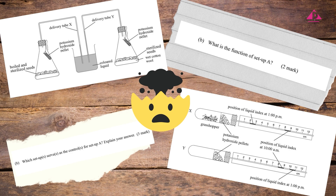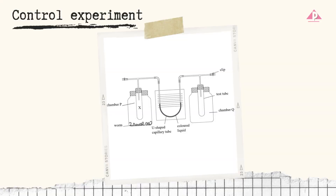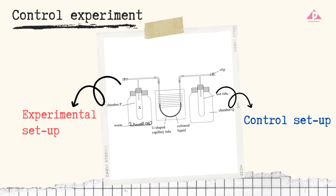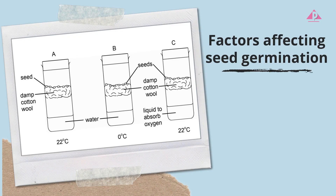Let's have a revision on the definition and purpose of control setups. A control experiment consists of at least two setups: an experimental setup and a control setup. The only difference between these two is the presence of the independent variable, which is the factor under investigation. Other factors are kept constant to ensure it is a fair investigation.